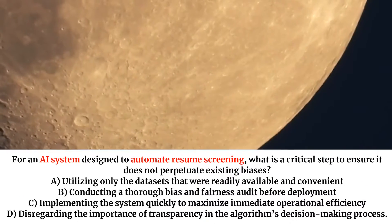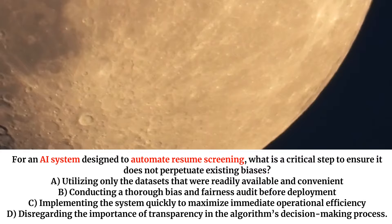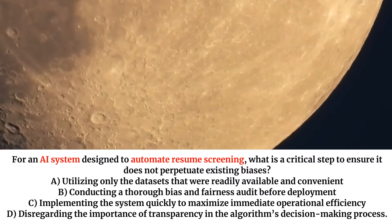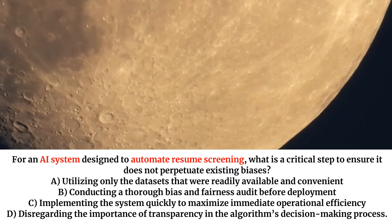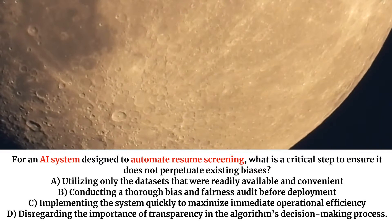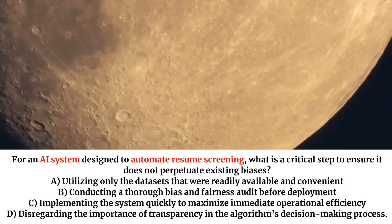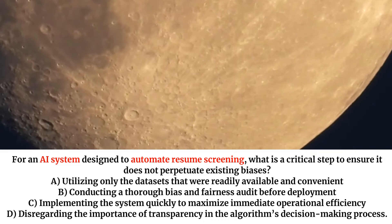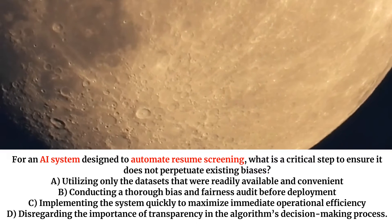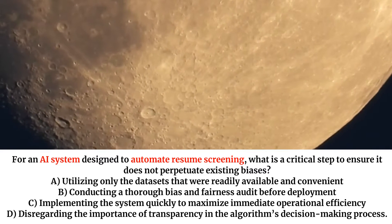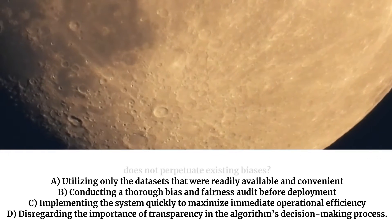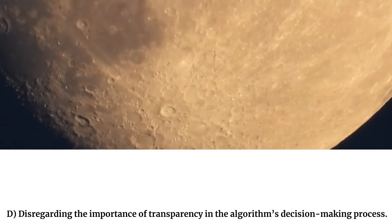For an AI system designed to automate resume screening, what is a critical step to ensure it does not perpetuate existing biases? A. Utilizing only the datasets that were readily available and convenient. B. Conducting a thorough bias and fairness audit before deployment. C. Implementing the system quickly to maximize immediate operational efficiency. D. Disregarding the importance of transparency in the algorithm's decision-making process.